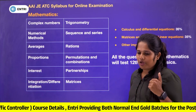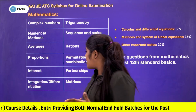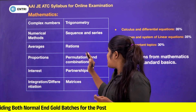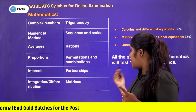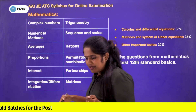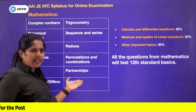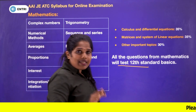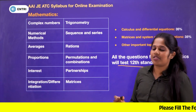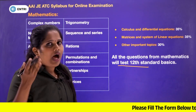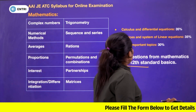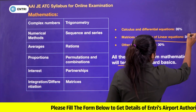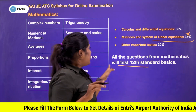Coming to mathematics: topics include complex numbers, numerical methods, averages, proportion, interest, integration and differentiation, trigonometry, sequence and series, ratios, permutation and combination, partnership, and matrices. If you are going to study mathematics at B.Sc. level, it is based on 12th standard. Calculus and Differential Equations are 35%, and Matrices and System of Linear Equations are 35% — those are the important topics.